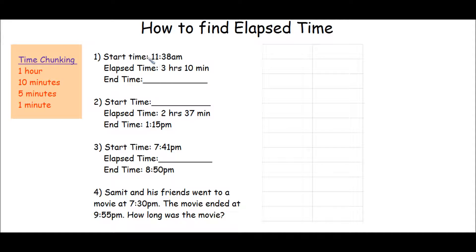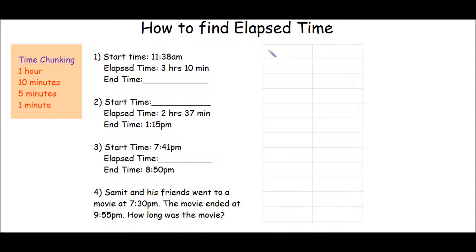Let's say they give you a start time of 11:38 AM, and they tell you that three hours and ten minutes have passed by — that's what elapsed time means. So we put down what we started with, which is 11:38, and we're going to add the three hours and ten minutes in chunks.